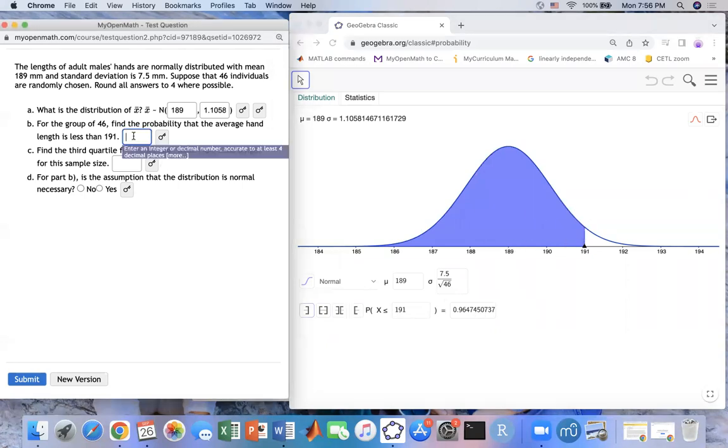So you have almost everything right here. So the answer over here that you will type the probability would be 0.9647 that you have in there. That's four decimal places.